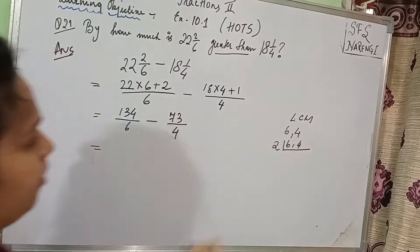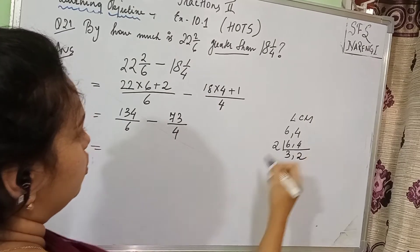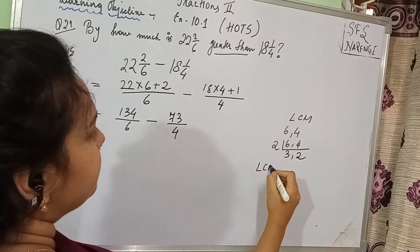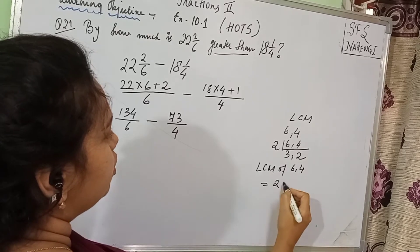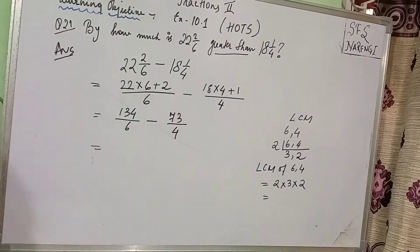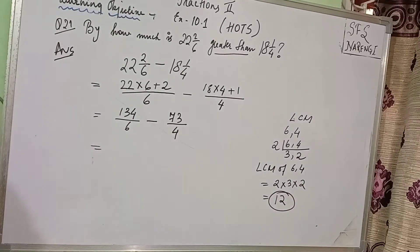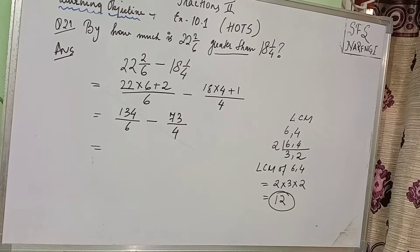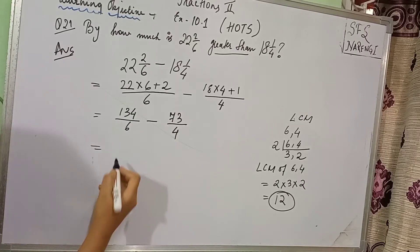The prime factorization of 6 and 4 divided by 2 gives you 3 and 2. So the LCM of 6 and 4 is equal to 2 multiplied by 3 multiplied by 2. How much is that? 3 twos are 6, 6 twos are 12. So what does it mean? It means that you have to write the denominators in such a way that they are 12.